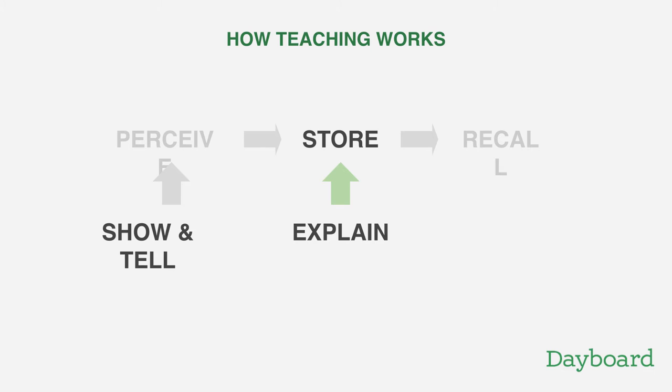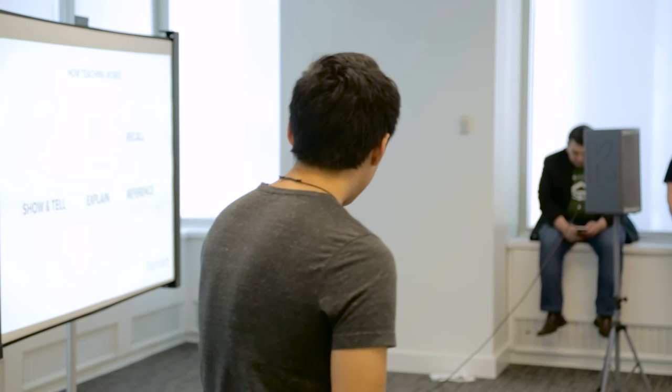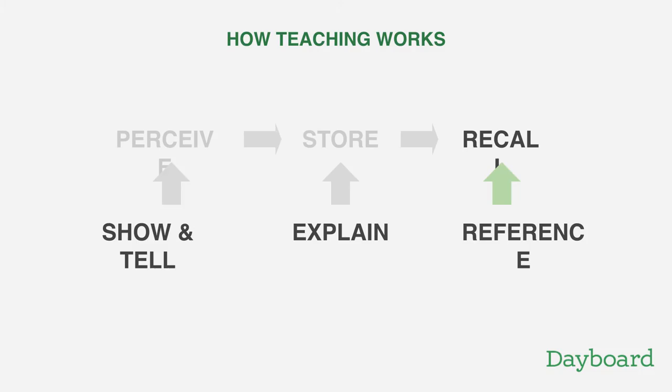Finally, the third thing you can do as a teacher is be a reference for somebody. That's when they understood something but can't actually remember it, and you need to be there to fact-check for them. This process of show and tell, explaining, and referencing is basically what you're doing as you teach somebody something new — whether you're teaching yourself, your users, or somebody else. Those are the stages you're walking through.